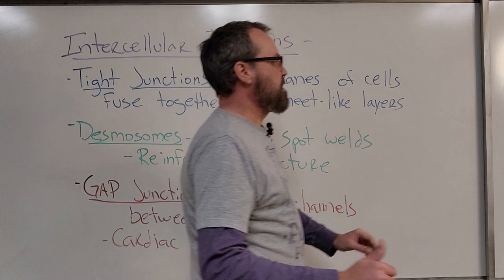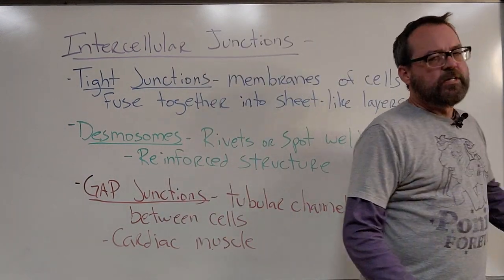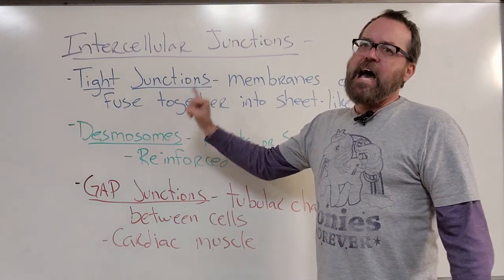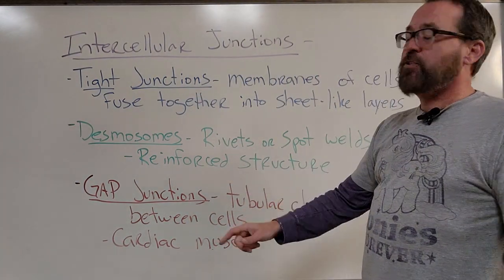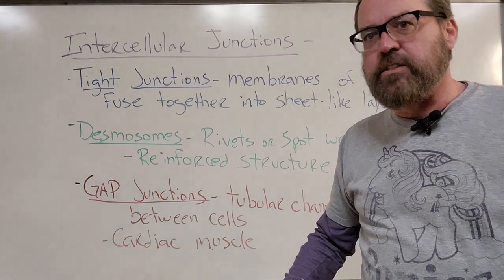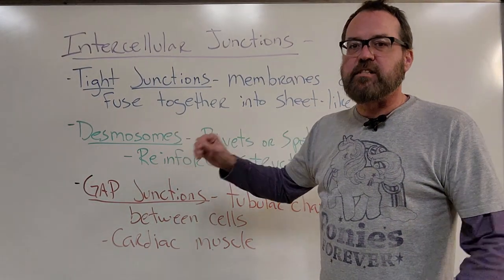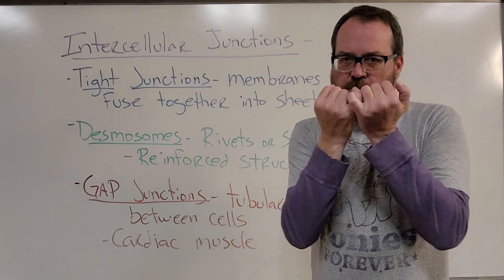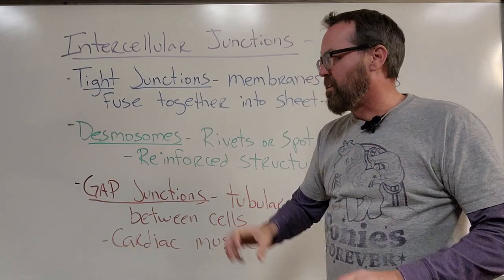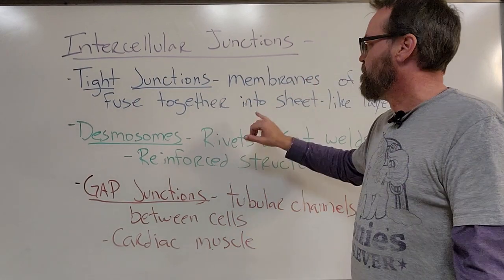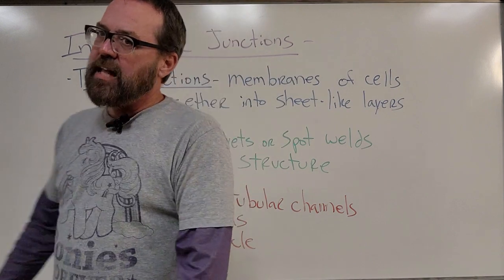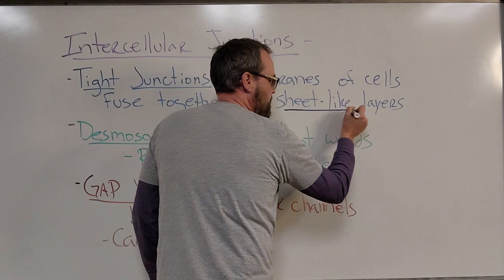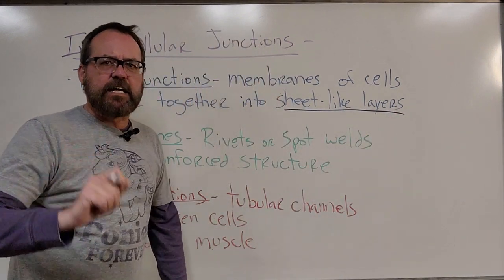Intercellular junctions. Tissues form when groups or layers of cells come together and converge, and that happens through the action of intercellular junctions. We have three basic intercellular junctions to distinguish. First, tight junctions — this is where membranes of adjacent cells come together and fuse. Those membranes glue themselves together, and typically this forms sheet-like layers. That's the key concept associated with tight junctions.